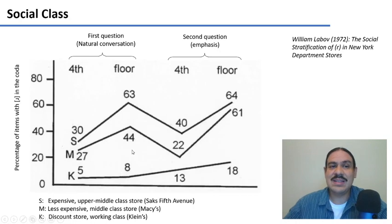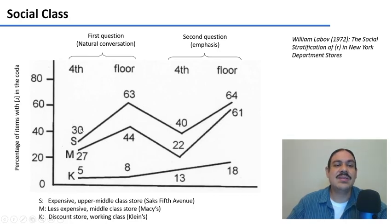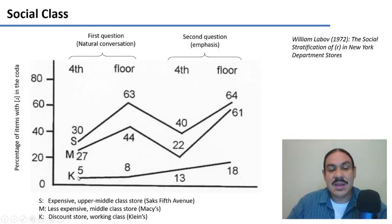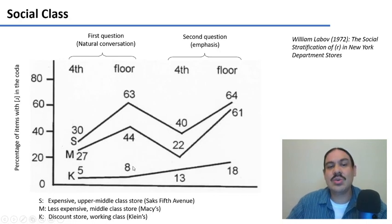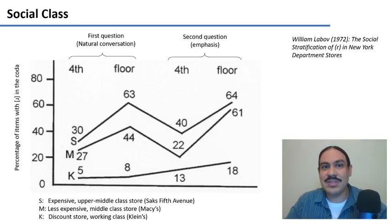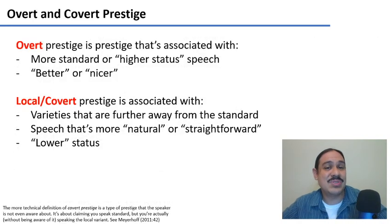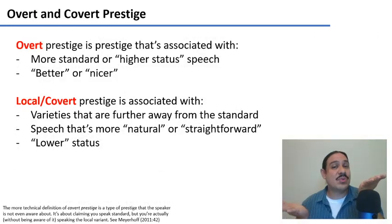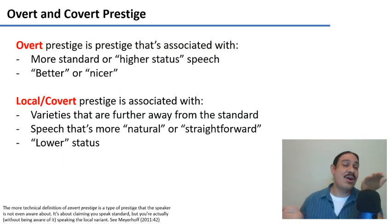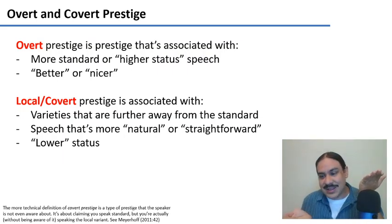Labov figured out that the rhoticity of someone's speech was related to social class. The higher up you were in social class, the more you tended to use the R. On the other hand, working class shoppers at Klein's tended to use the R less. So the R was a marker of social class in the area.